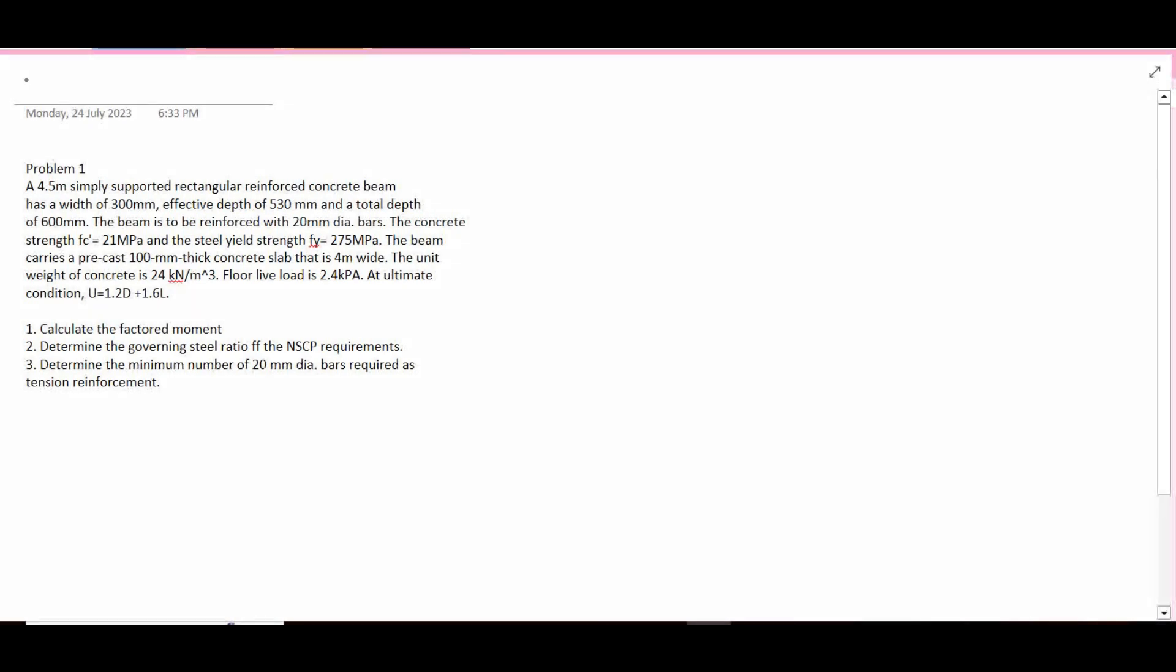Hey, what's up everyone? For today's video, we will be solving a reinforced concrete problem. Problem 1: a 4.5 meter simply supported rectangular reinforced concrete beam has a width of 300 mm and an effective depth of 530 mm and a total depth of 600 mm. The beam is to be reinforced with 20 mm diameter bars.